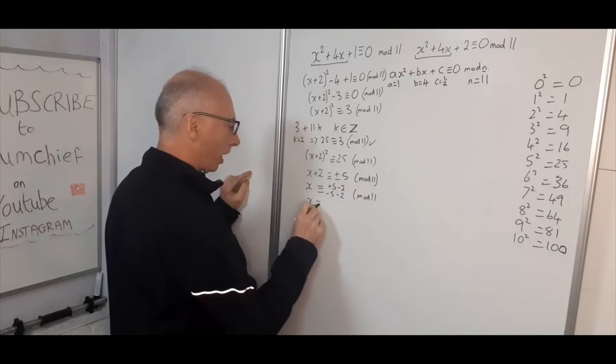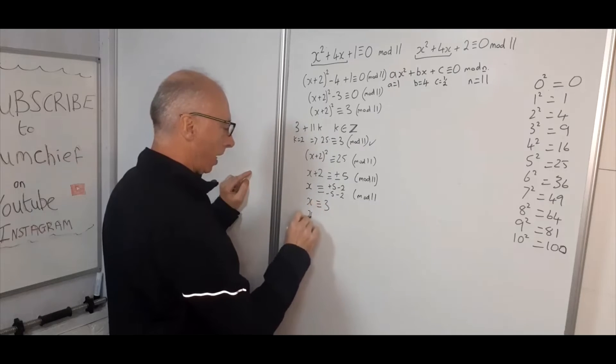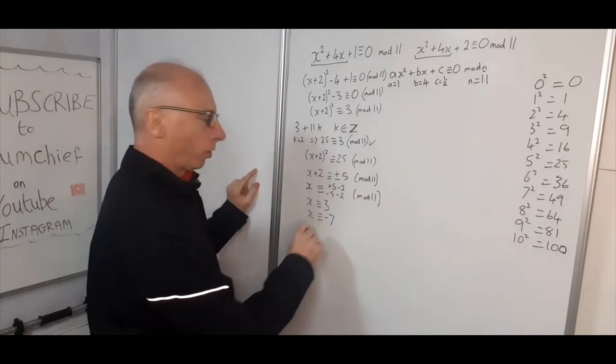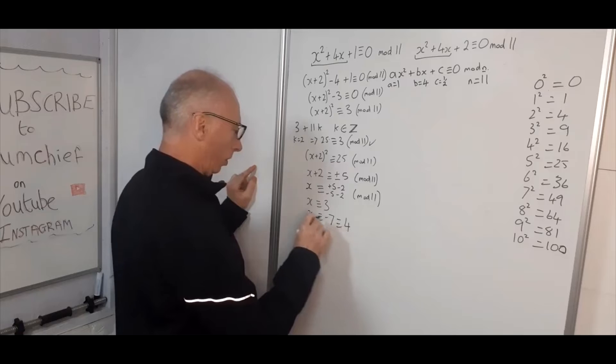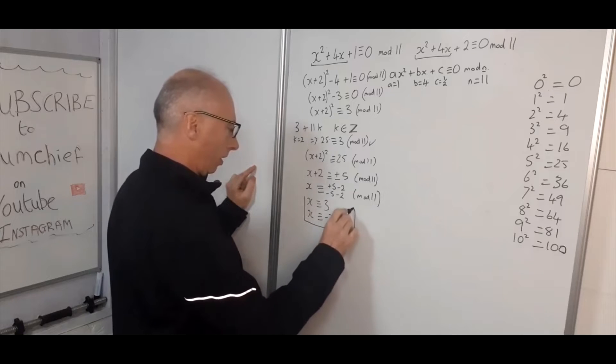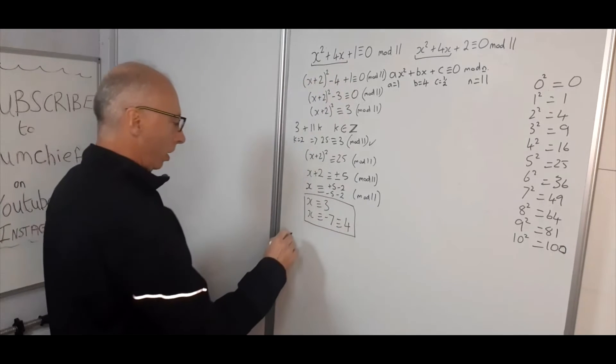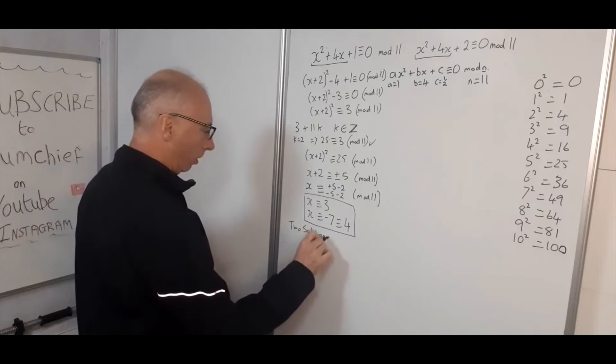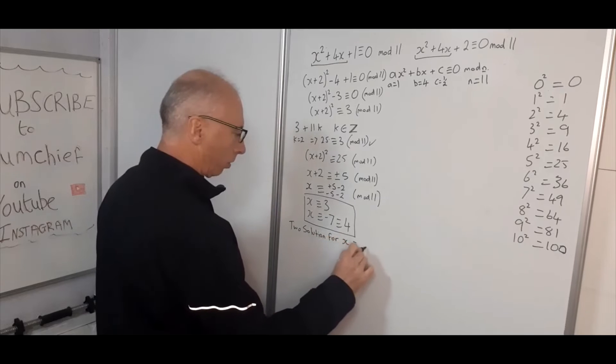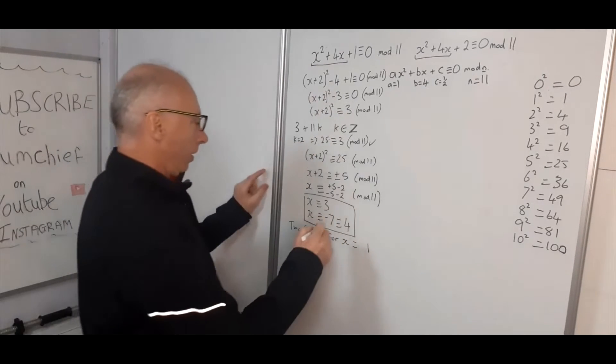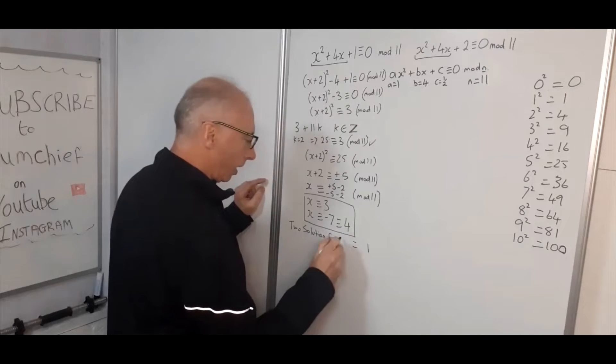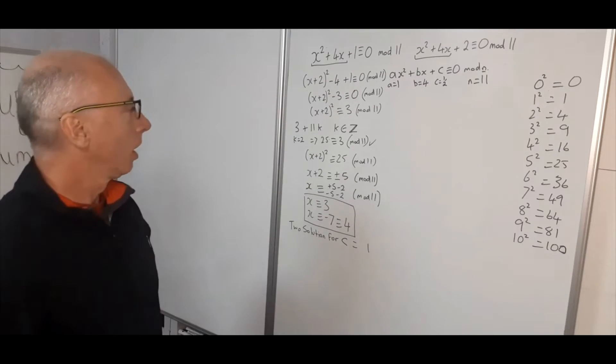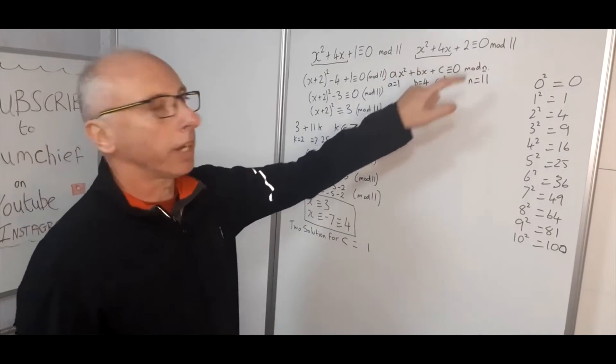So now we've got two solutions, x congruent with 3, or x is congruent with minus 7. But mod 11, we can also call this 4. So that's congruent with 4. So this gives us two solutions for the value c equals 1. So let's write here now a little table here. Two solutions for c equals 1. So when this value here of c is 1, we've got two solutions. Okay, so now let's have a look at this side, and let's see how we get on there.